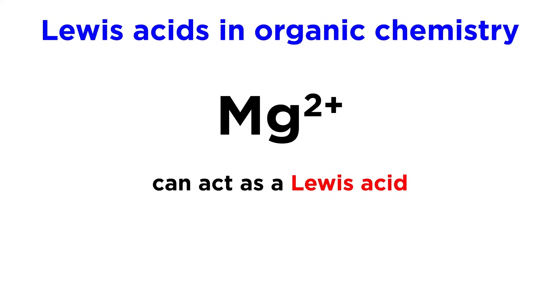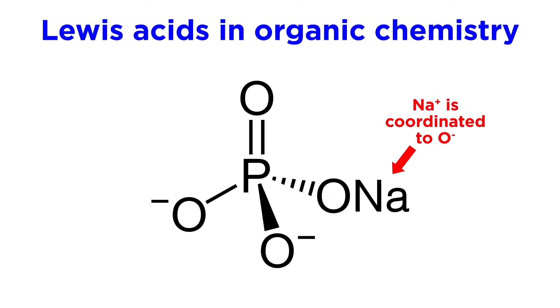One of the reasons this is relevant in organic chemistry is that we will frequently see metal cations acting as Lewis acids. Take the magnesium 2+ ion. This is electron deficient due to the formal positive charge, so electrons can coordinate to it.